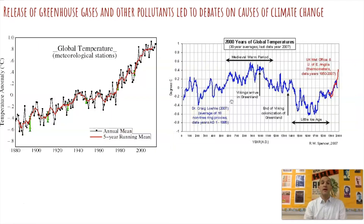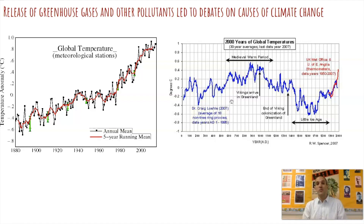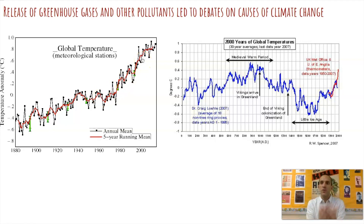We also have the release of greenhouse gases and other pollutants, which lead to debates about what causes climate change — whether it's man-made or a natural progression. Most climate scientists today believe there is some kind of man-made impact. Some people point to carbon dioxide, others to methane gas, which is mainly released by cows, as leading to greenhouse gases and the warming of Earth's temperatures. In this chart, the red line is the five-year running mean of global temperature based on meteorological stations, showing how much temperature has risen between 1880 and today.